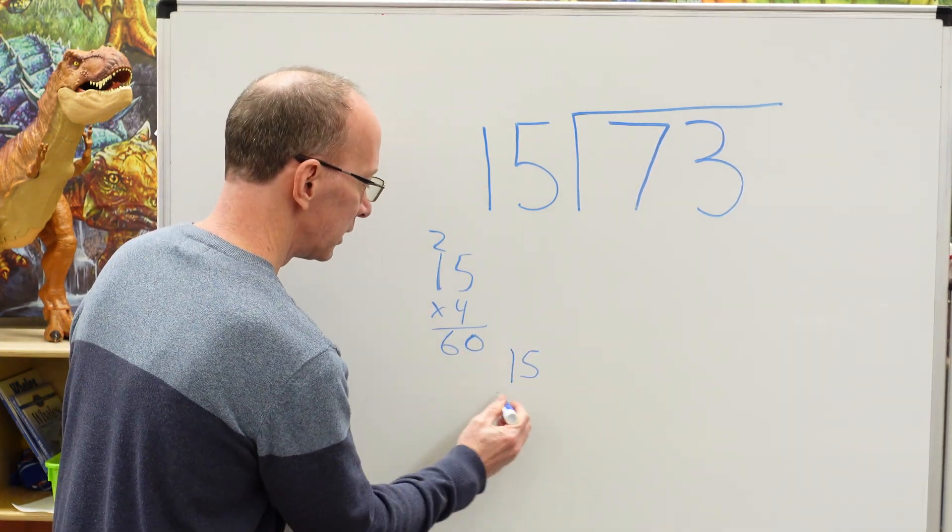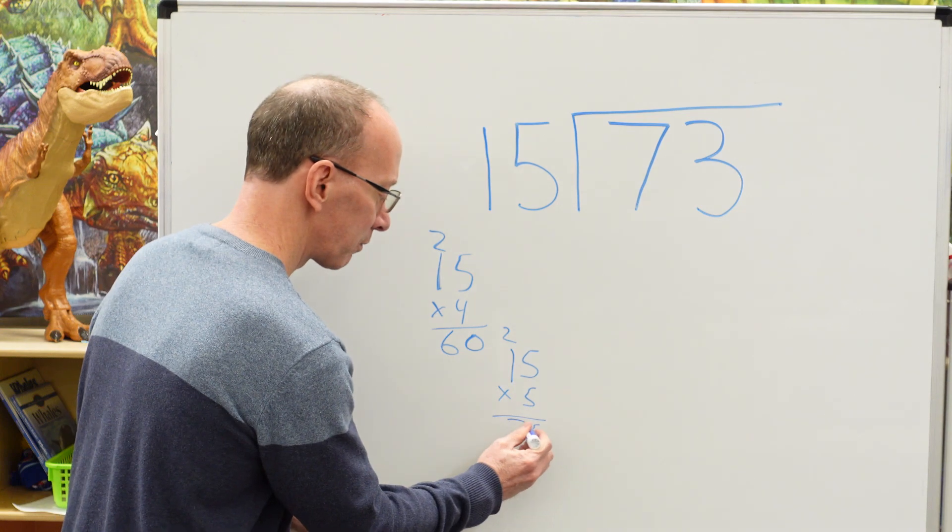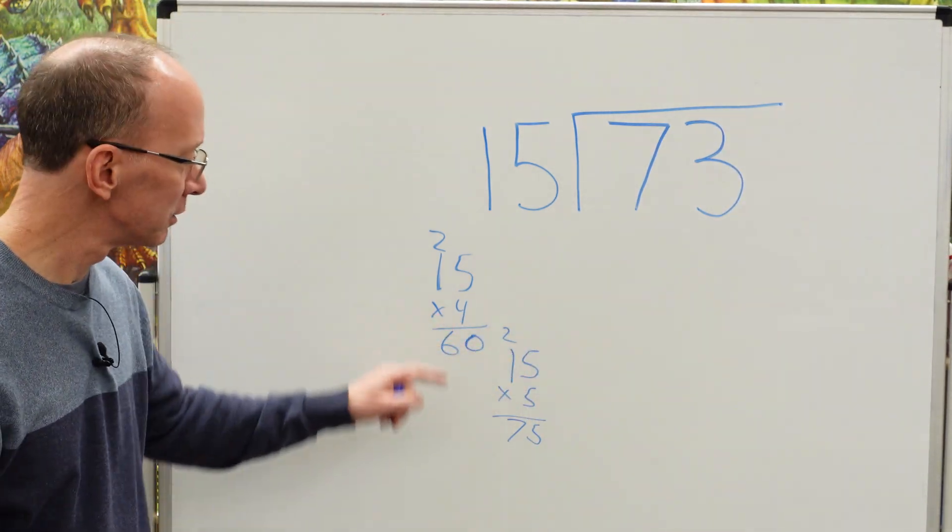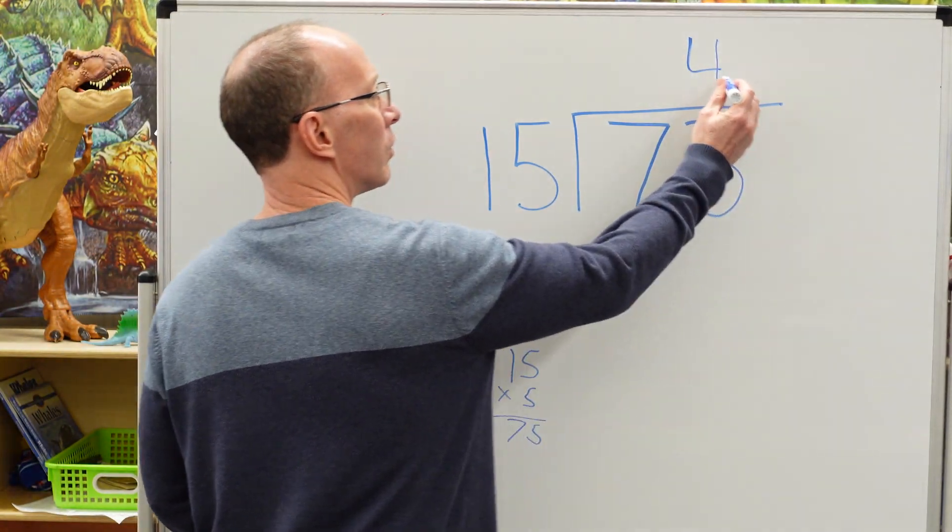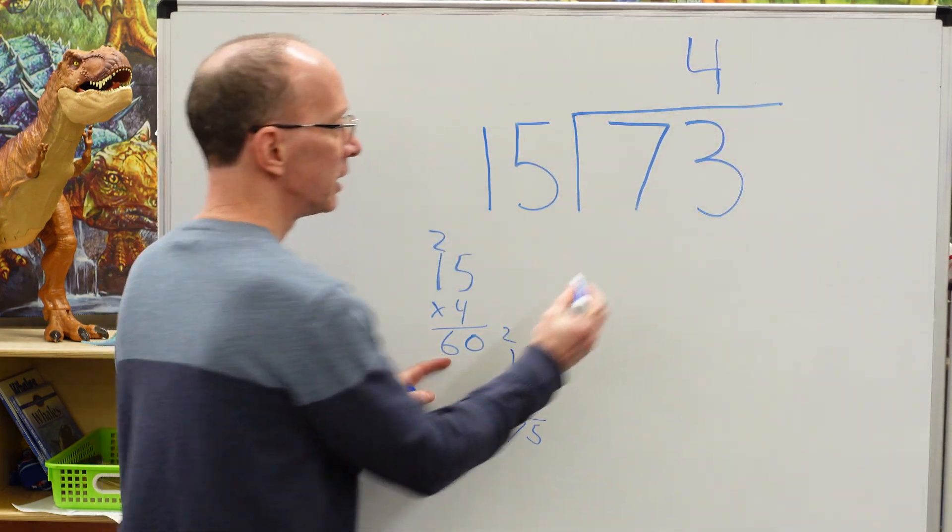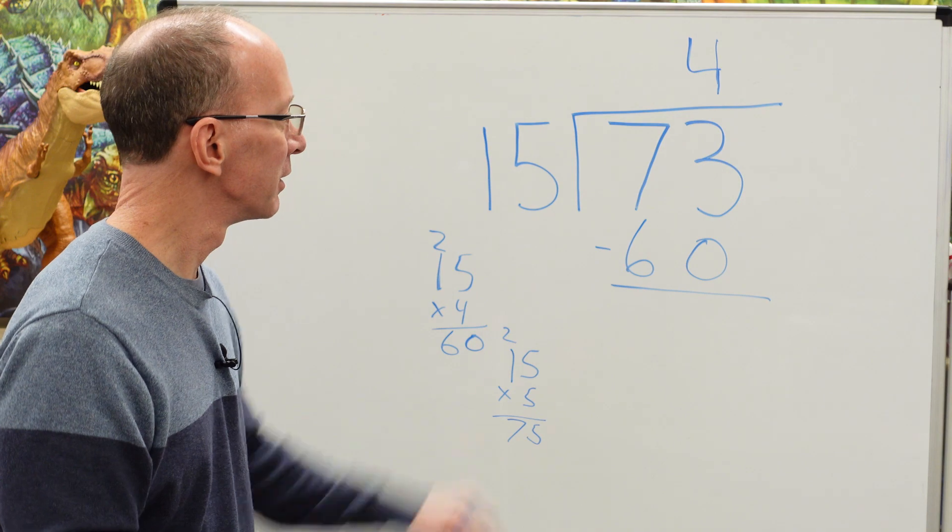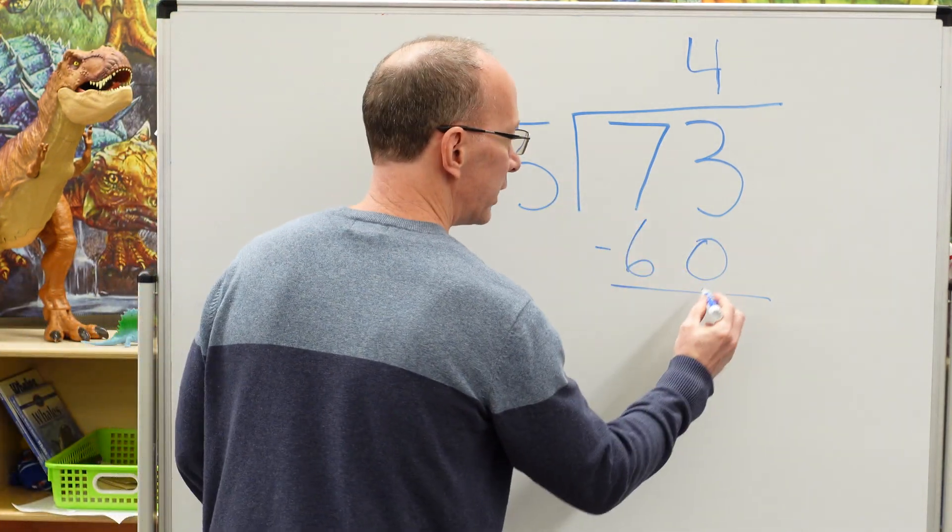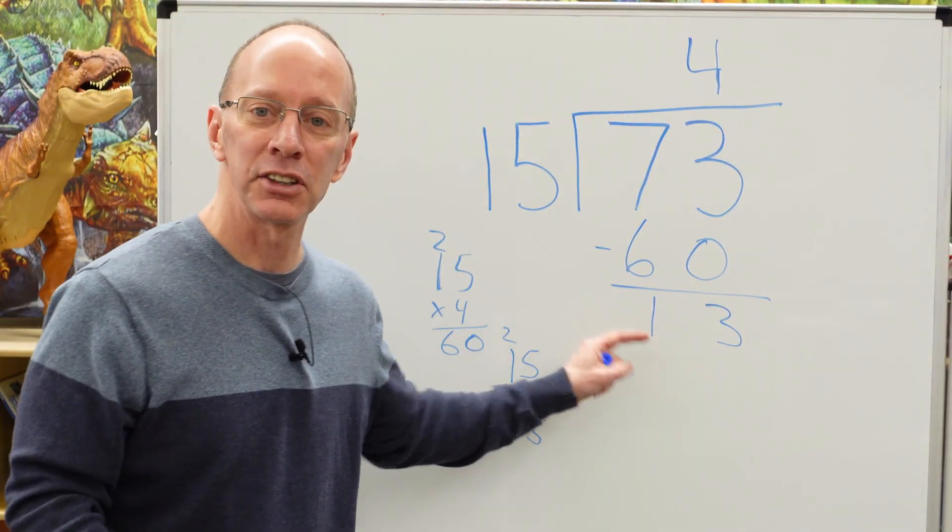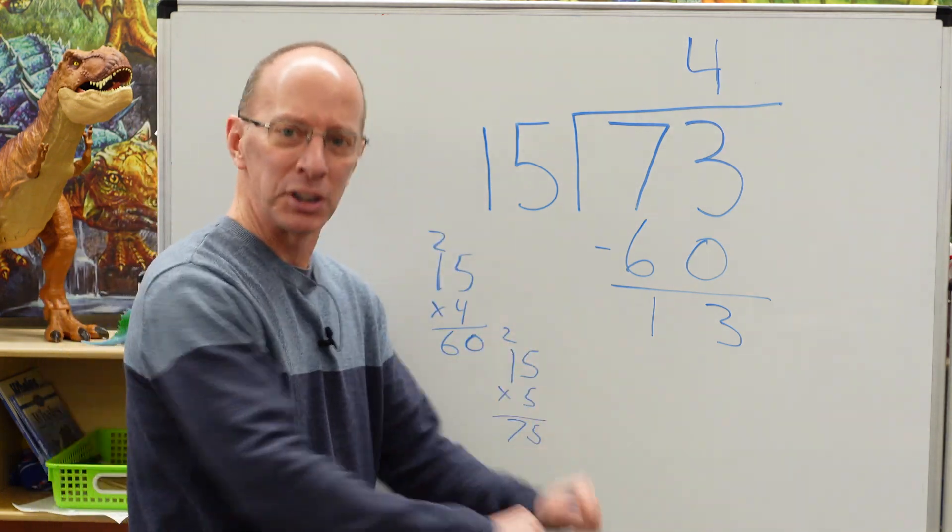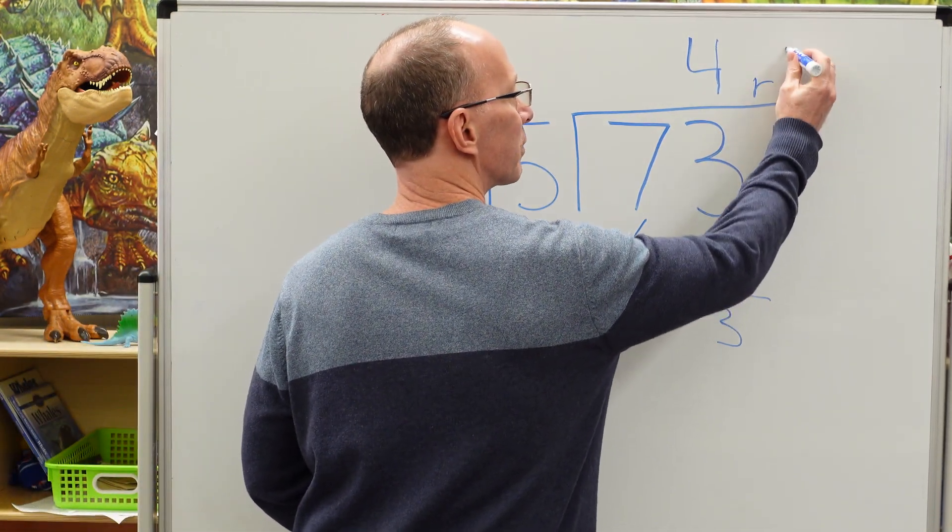What would 15 times 5? 5 times 5 is 25, carry the 2, 5, 6, 7. Too high. This is our winner right here. 15 times 4. So we put the 4 right here. 4 times 15 would be 60, so you put the 60 right here. Our next step is subtraction. Go ahead and subtract. Bring that 3 down. 3 minus 0 is 3, 7 minus 6 is 1. I cannot put 15 into 13. I can try to squish it in there, can't do it. That's our remainder. So we put remainder 13 right here.